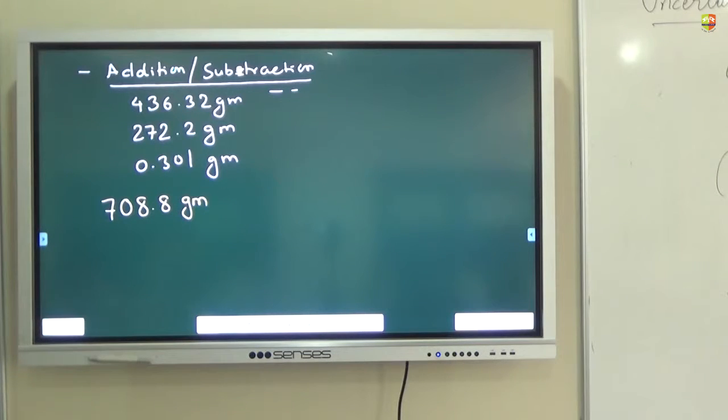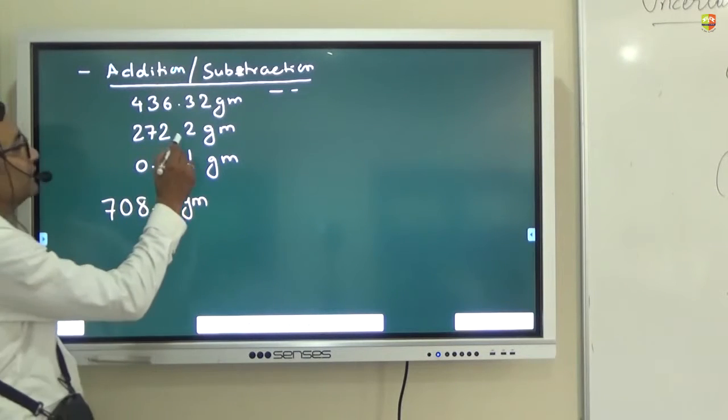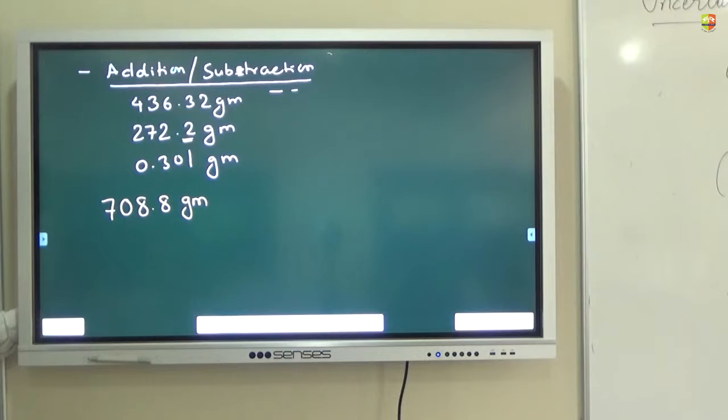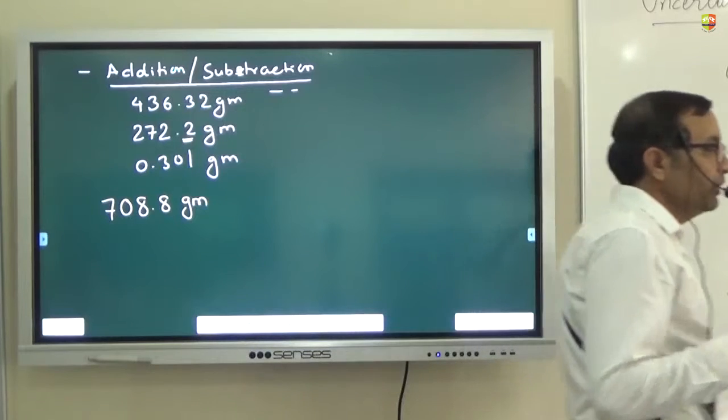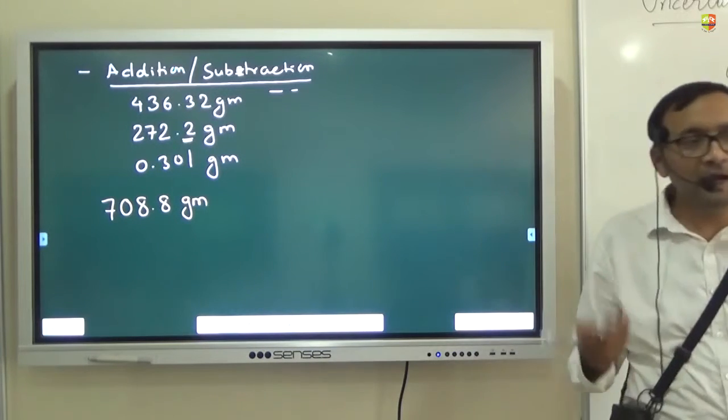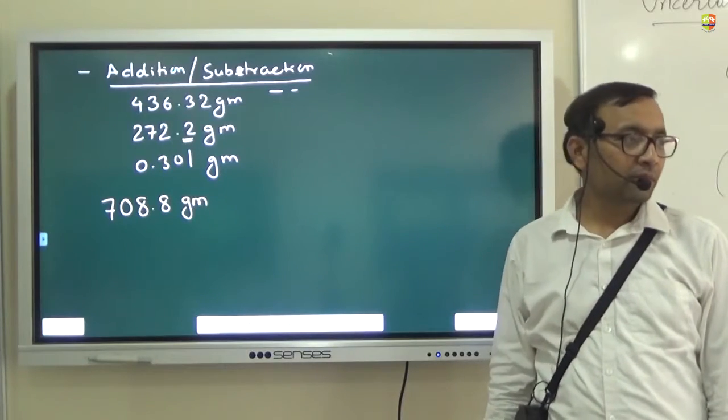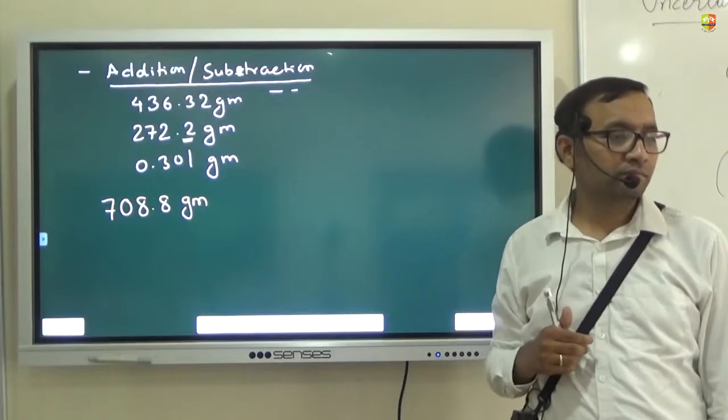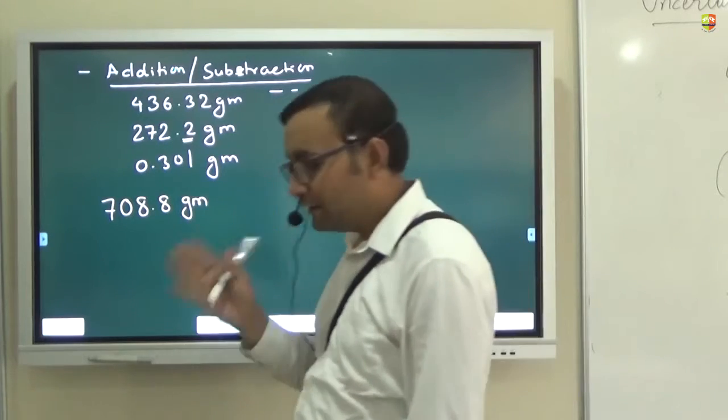Is this the answer you are getting, all of you? Yes, sir. So you should discard the second and third decimal places because the least decimal place is just one. Understood? At times I have seen that when you divide the two readings, you keep on writing number of decimal places. It doesn't matter—your second decimal place itself is uncertain. How can you write third and fourth decimal place? You should stop at the first uncertain digit itself.